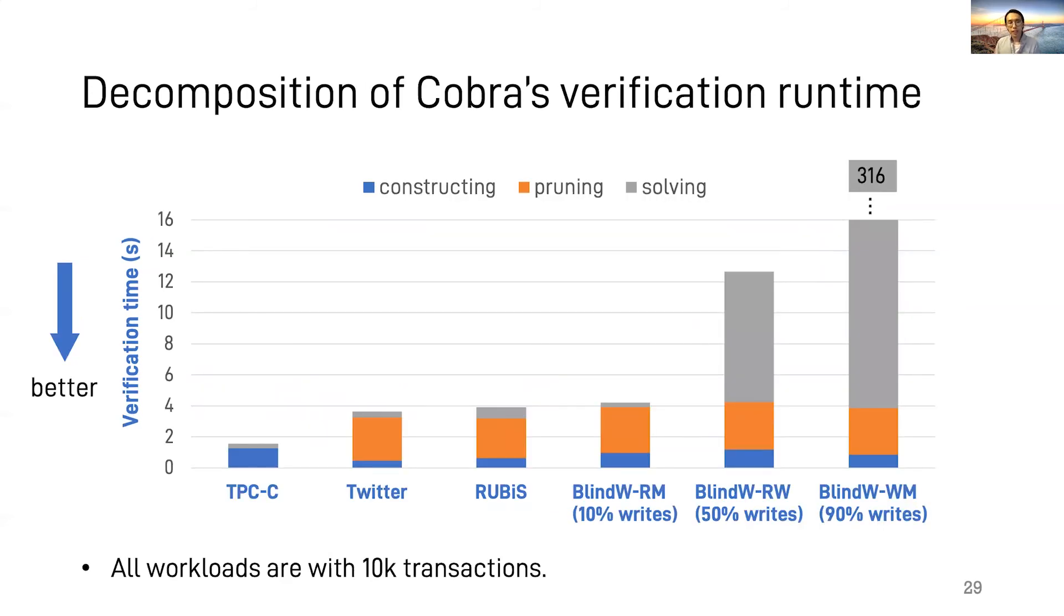Second, in order to understand the verification performance, we break down the verification time into three phases: constructing polygraphs, pruning constraints, and solving the problem using SMT solvers. In TPCC, all transactions are read-modify-writes. So after combining writes, there are no constraints. Therefore, Cobra doesn't prune.